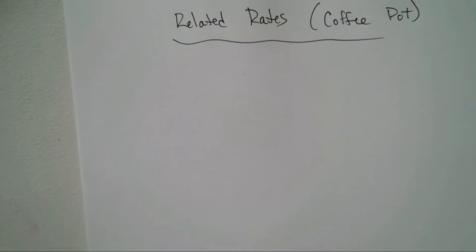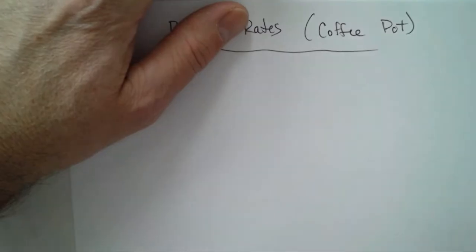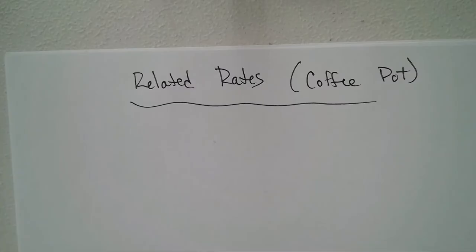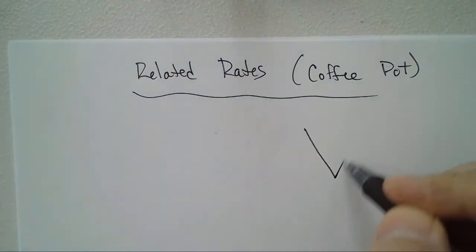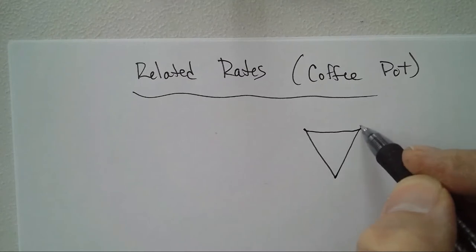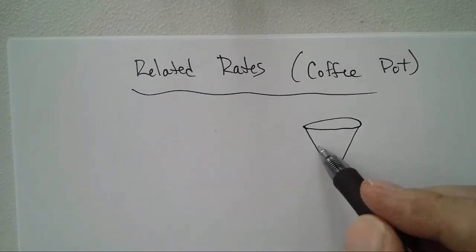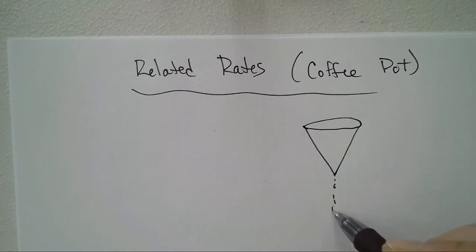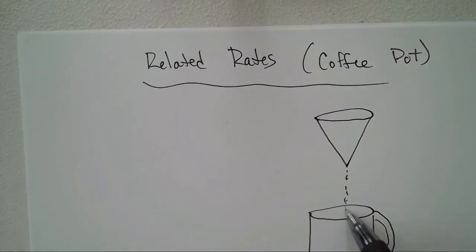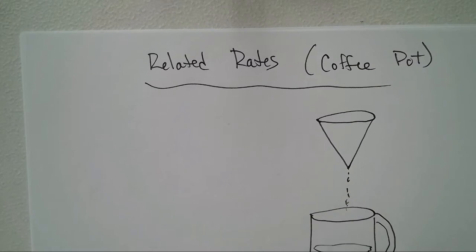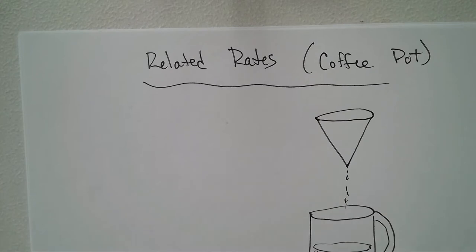Alright, so another example with a couple parts to it: related rates, the coffee pot. So let's say we've got our cone and that is dripping into our cylindrical coffee pot.